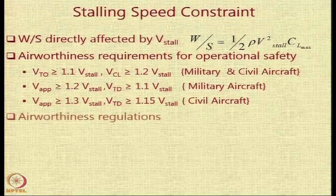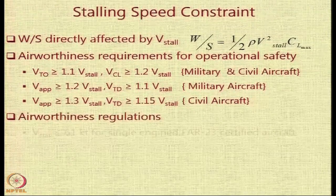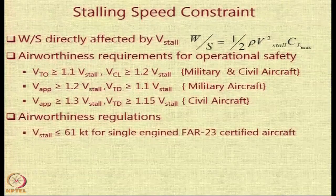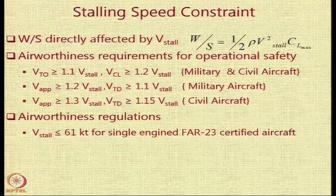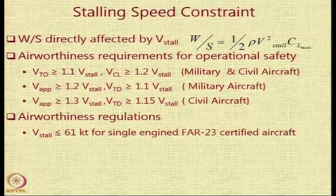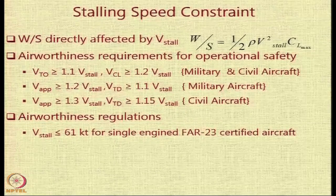In the case of civil aircraft, the margins are slightly higher: 30% for approach speed and 15% for touchdown speed respectively. The regulations are also sometimes very explicit regarding the stalling speed. For example, if the aircraft is to be designed for FAR 23, and a single-engine aircraft is used, then V_stall has to be less than 61 knots.